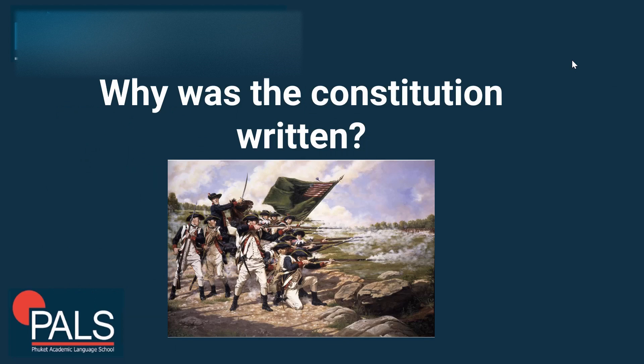Why was the Constitution written? Well, the colonists, after fighting their bloody American Revolutionary War, wanted to create a better country for themselves and for their children in the future. During the age of the Enlightenment, the colonists had decided that they believed that the natural rights of man — rights given to them by God — which they believed were inalienable and could not be taken from them, were the foundation for their society.